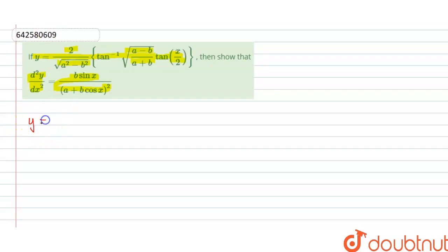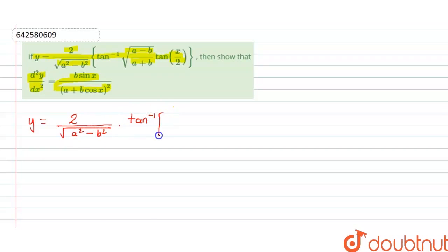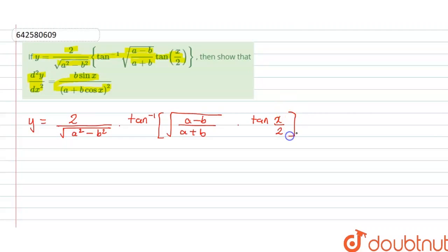First, let's write y over here. y is equal to 2 upon square root of a square minus b square, into tan inverse of square root of a minus b upon a plus b, into tan of x by 2. So, this is y.